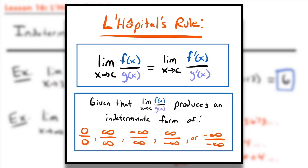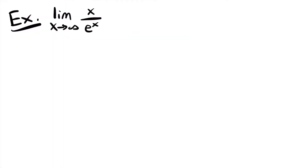Before you ever consider using this rule and take the derivative of the numerator and denominator, you first need to check what happens if you plug in the value of x that you're approaching. If it does not produce one of these indeterminate forms, you cannot use L'Hôpital's Rule. Now let's take a look at an example where we use this rule.